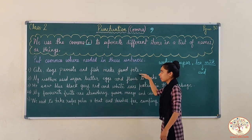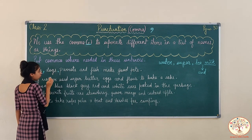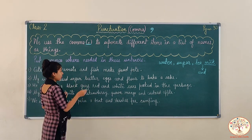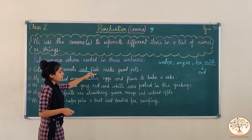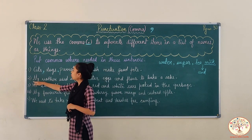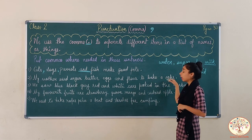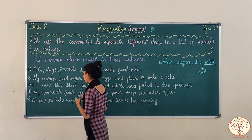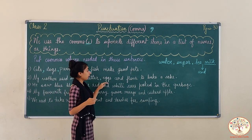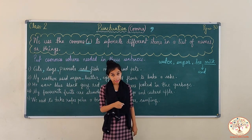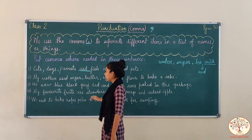List कहां पर दिख रही है? It is here — cats, dogs, parrots and fish. 'Make good pets' is not the list. My mother used sugar, butter, eggs and flour to bake a cake. So where is our list? Sugar, butter, eggs and flour — cake बनाने के लिए उसकी ममा ने sugar, butter, eggs and flour use किया.